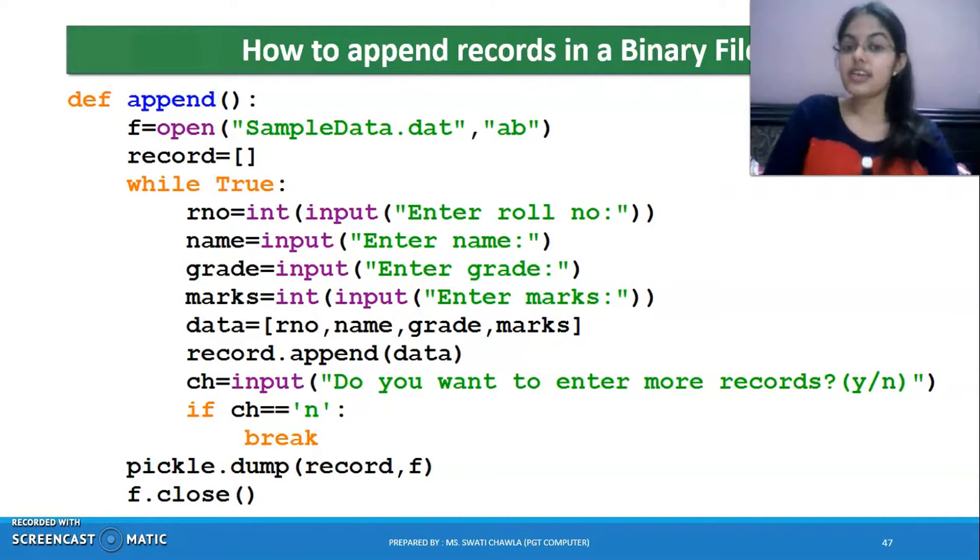But in case if I want that my previous records remain as is and are not overwritten, which mode do I have to use? Append mode. What happens with your file pointer or cursor? It will be at the end of file position.